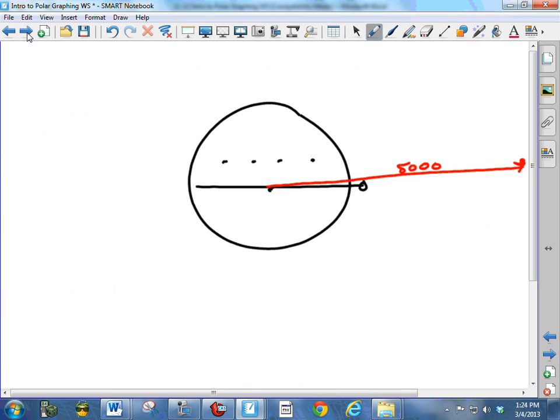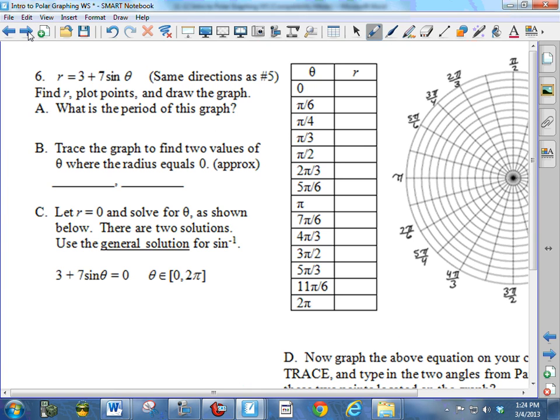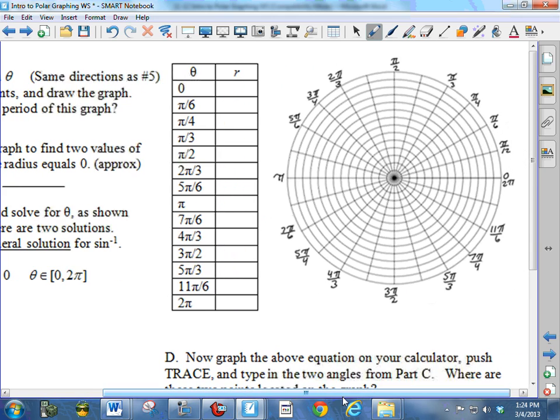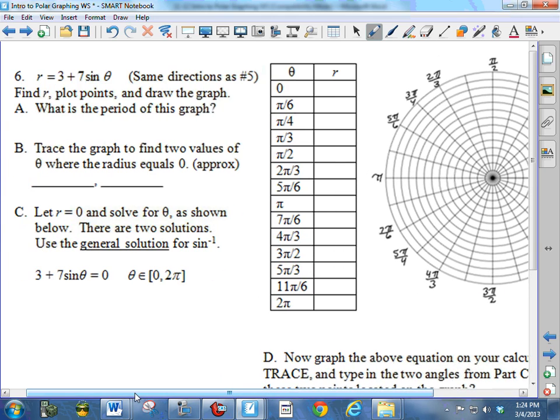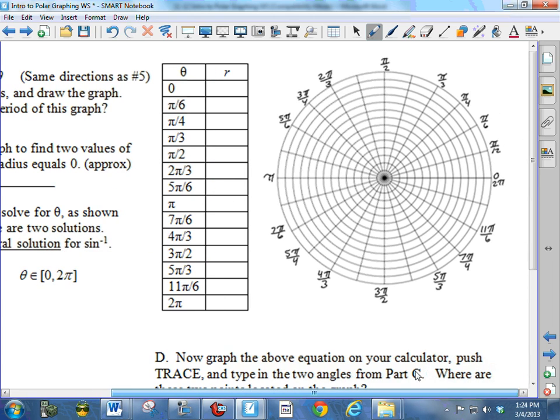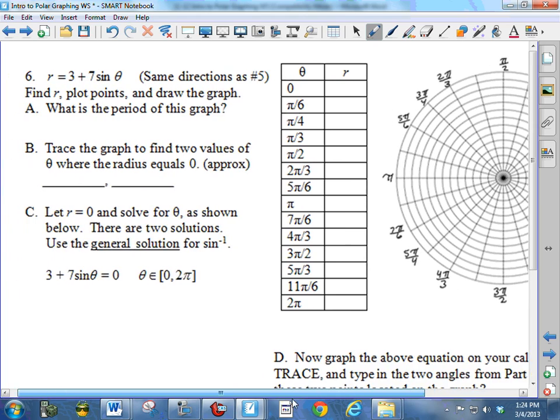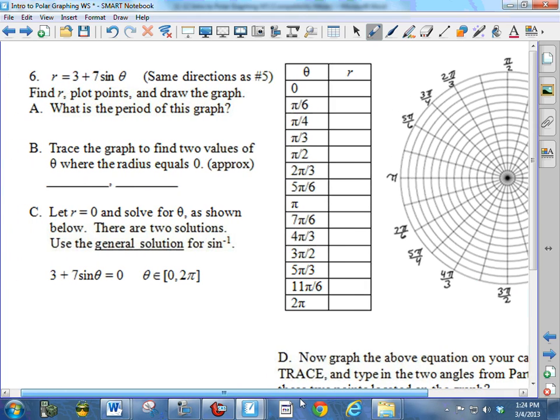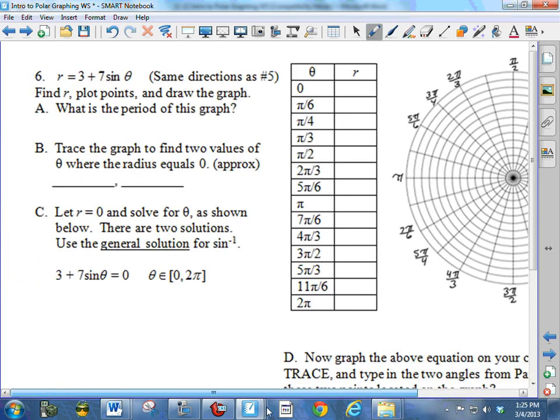Let's look at the next problem. The next problem, basically I want you to do the same thing. I want you to use the equation here, 3 plus 7 sine of theta. I want you to plug in the different values for theta. I want you to fill in the r values and plot the points. This will give you a figure that is not familiar. It's not going to look like anything you've seen before. So just after you've plotted all the dots, connect them to the best of your ability. It will be a curve. It won't be jagged looking or pointy looking. So plot the dots, connect them.